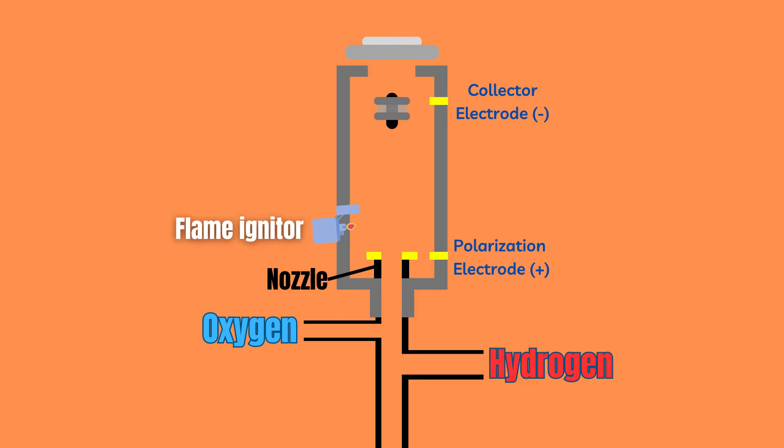The positive electrode doubles as the head of the nozzle and is where the flame is burning. The negative electrode, or collector electrode, is situated above the flame.